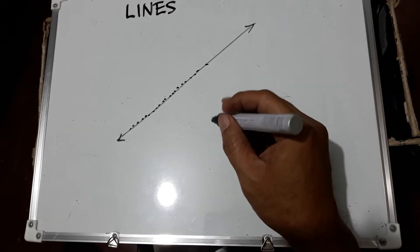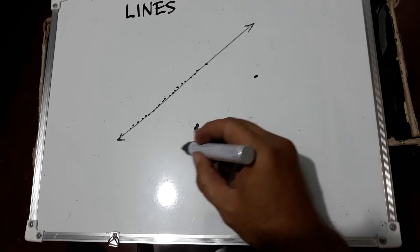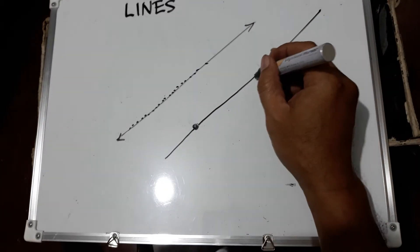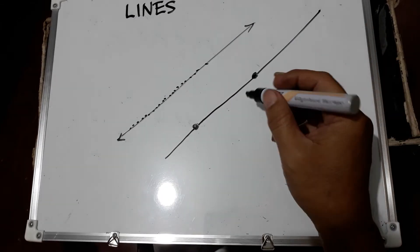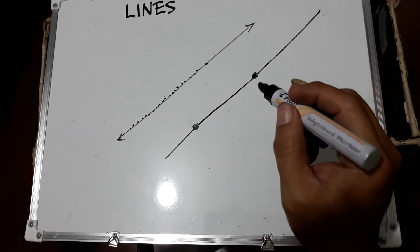But how many points are needed to form a line? Only two points are needed to form a line. So if these two points are known, then it means that we can make an equation for this line.